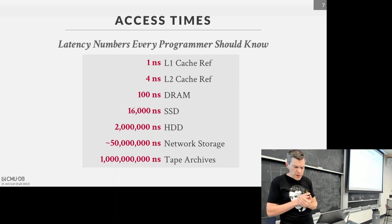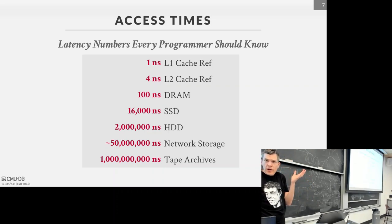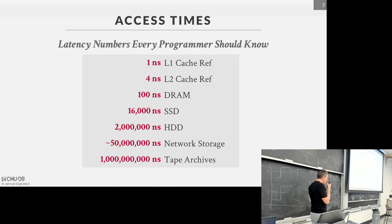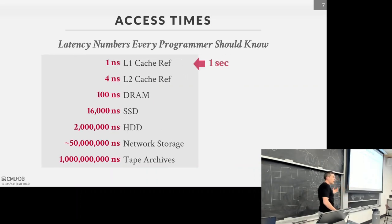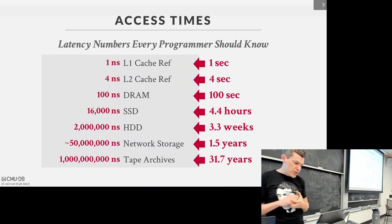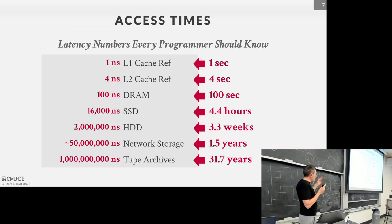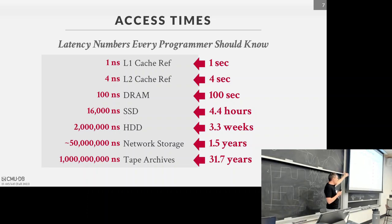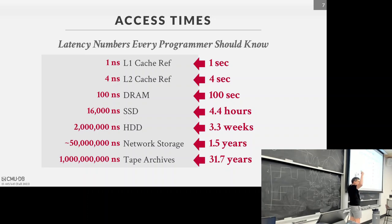As humans, it's hard to reason about nanoseconds. A simple trick — attributed to Jim Gray from the 90s — is to substitute one second for one nanosecond. Then you immediately see how massively slower these devices are. Doing an L1 cache access is like walking to a table and looking at a book. Reading from DRAM is like walking to the library. Reading from a tape archive is equivalent to a 31-year journey — like flying to Pluto and reading one book. We want to avoid disk access as much as possible.